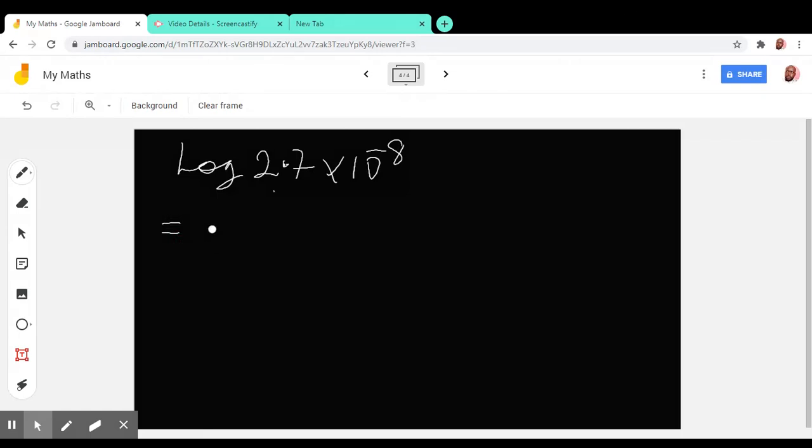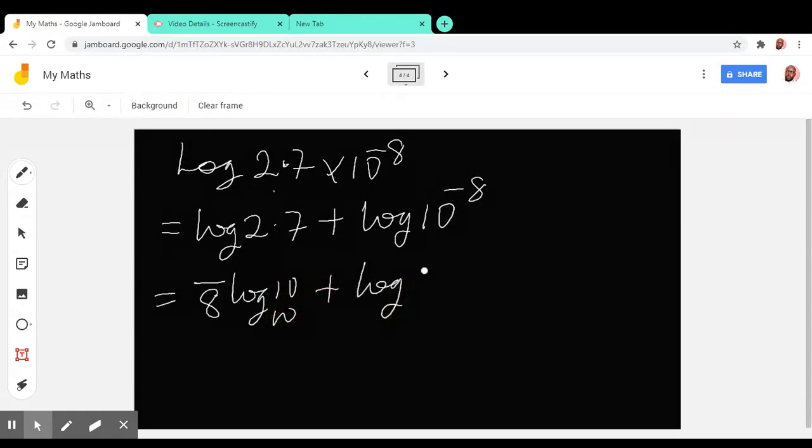which will enable us to expand this as log 2.7 plus log 10 raised to power minus 8. So moving forward we have that this is minus 8 log 10 to base 10 plus log 2.7 to base 10. Again, log 10 to base 10 is one, so we have minus 8 plus log 2.7.